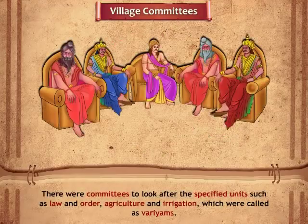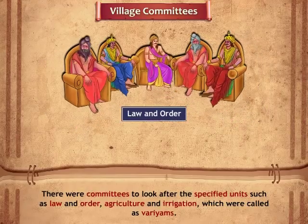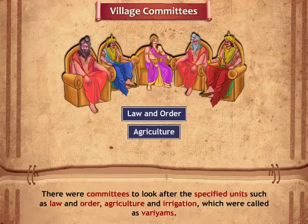There were committees to look after specified units such as Law and Order, Agriculture, Irrigation, etc., which were called Varyams.